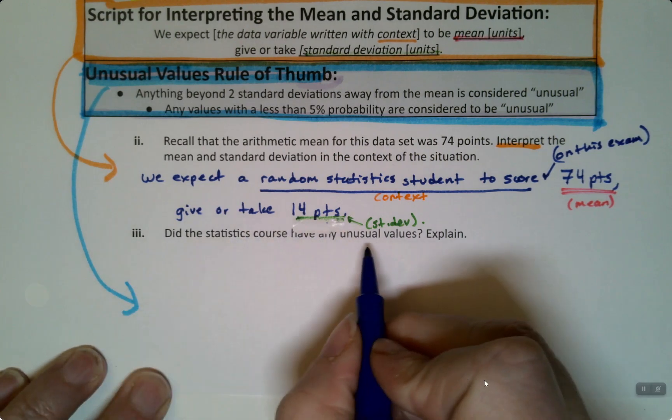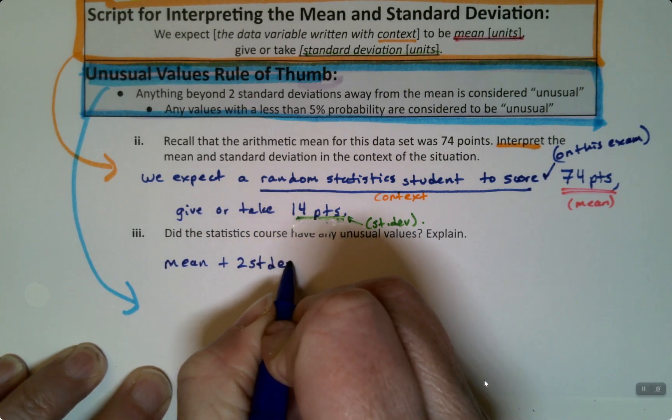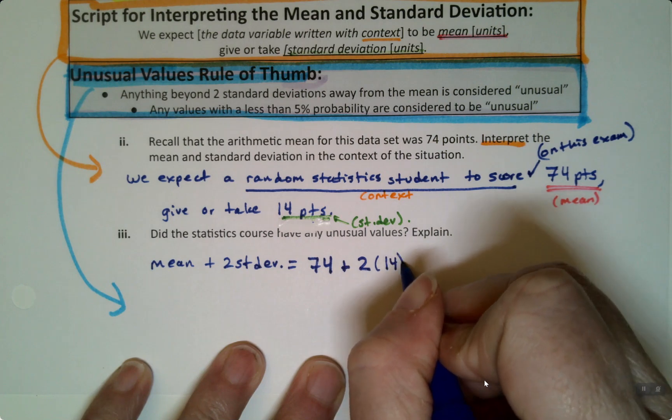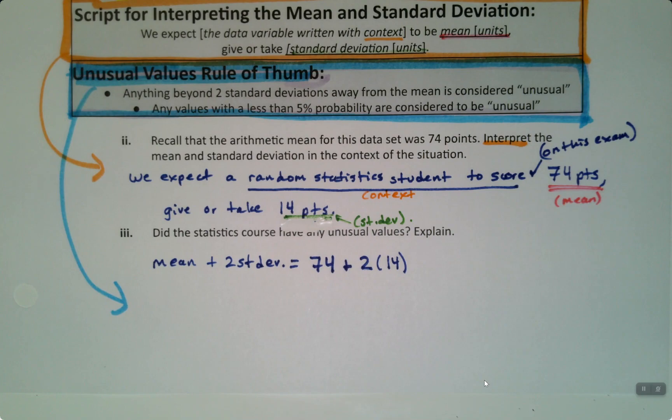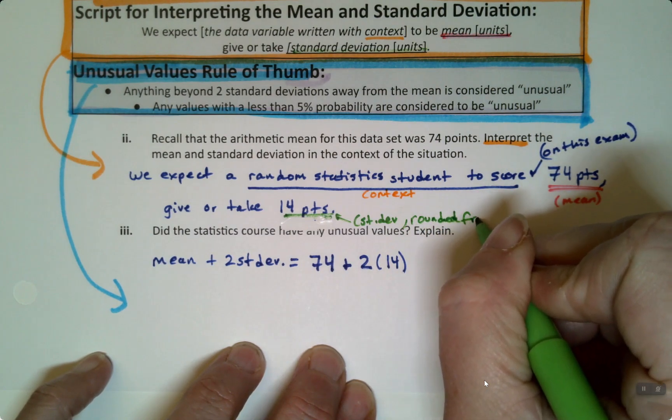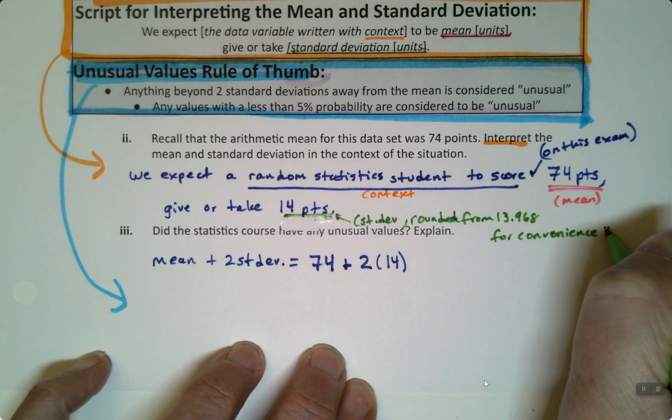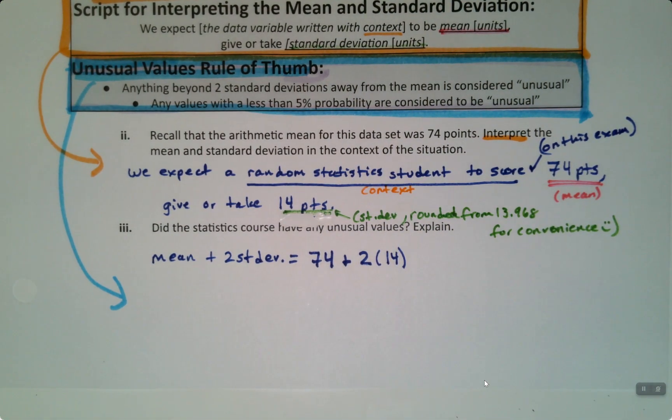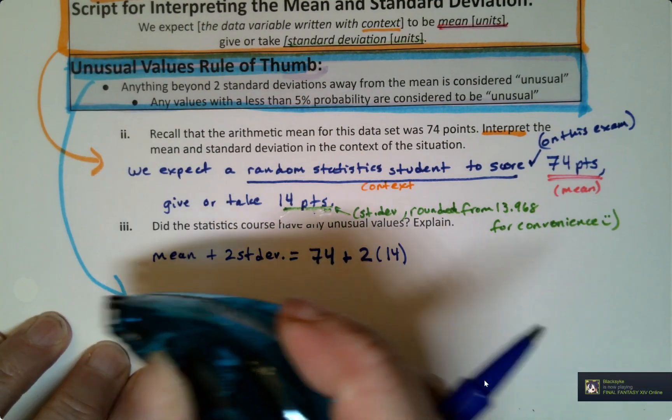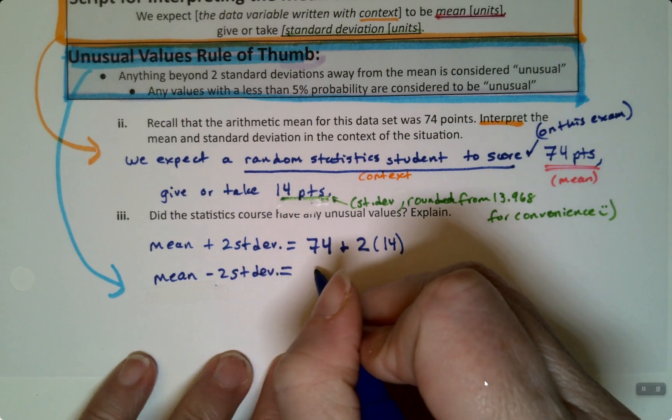So that means that unusual will be... Let's find out. So it's two standard deviations away. So let's take the mean plus two standard deviations. And let's find what that is. So the mean is 74. I'm going to add two standard deviations, which they were roughly 14. It was 13.968. So I'm just kind of rounding. I guess I could have added that up here. This is the standard deviation. I just kind of rounded it for convenience. Rounded from 13.968. Just for the sake of it. Just because it was convenient to me. Right. Not for any particular mathematical reason. Alright. Then I'm going to take the mean and I'm going to take away two standard deviations. I'm realizing I want to write this up a little bit higher. Alright. So when I find these two values, anything beyond these would be unusual.